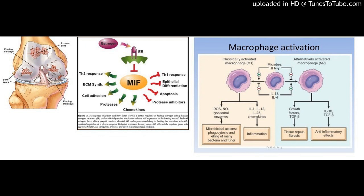Results: MIF inhibitor Z590 significantly inhibited the production of NO, TNF-alpha, and IL-6 in LPS-activated RAW 264.7 macrophage cells, and markedly inhibited LPS-induced expression of TNF-alpha, IL-6, inducible nitric oxide synthase (iNOS), and cyclooxygenase 2 (COX-2).